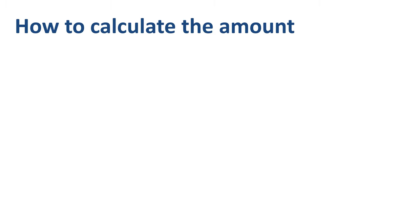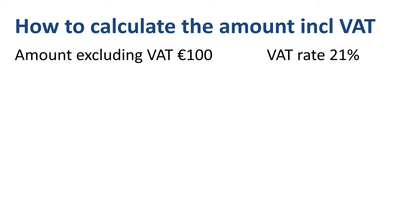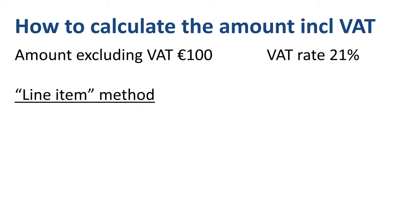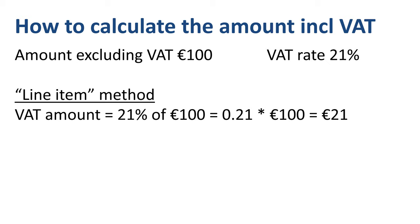Let's start with the first one: how to calculate the amount including VAT? In this example, the amount excluding VAT is 100 euros and the VAT rate is 21%. There are two ways to calculate the amount including VAT. The first is the line item method, just like companies do on an invoice — you add a separate line for the VAT amount. The VAT amount equals the VAT rate times the amount excluding VAT: 21% of 100 euros equals 0.21 times 100 euros, which equals 21 euros.